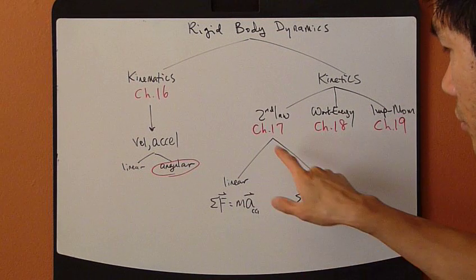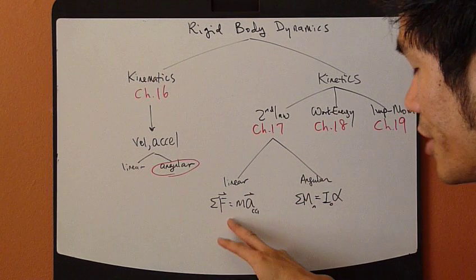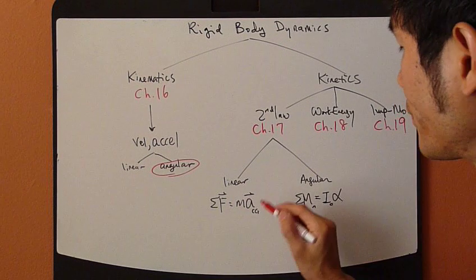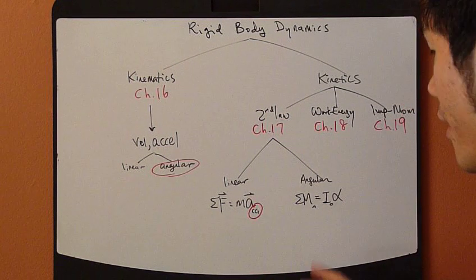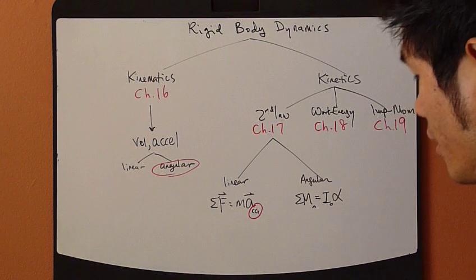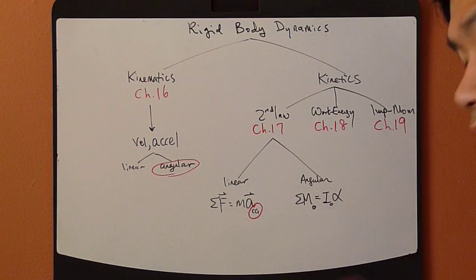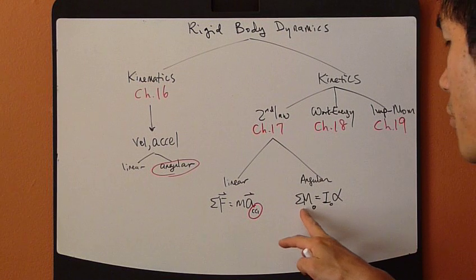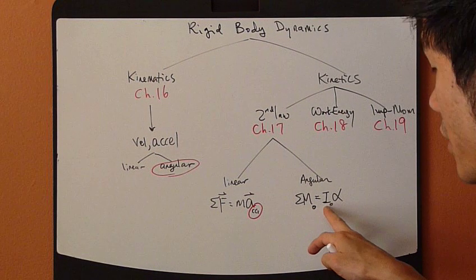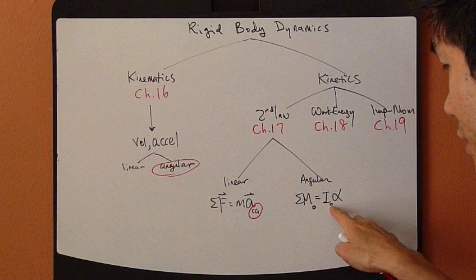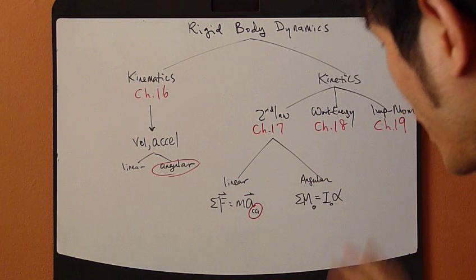For the second law, we're going to look at linear and angular components. For the linear portion, it's just like before — F equals ma — except now this acceleration is the acceleration at the center of gravity (G). For the angular portion, we use an equation similar to Newton's second law but for the angular component. It's called the moment: the sum of moments M about any point O equals I times alpha. I is called the mass moment of inertia, taken about the same point O, times alpha, which is angular acceleration.